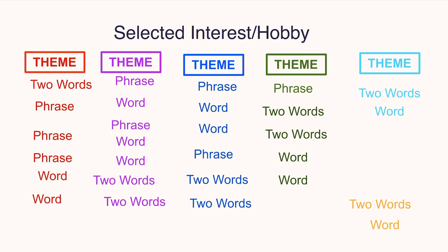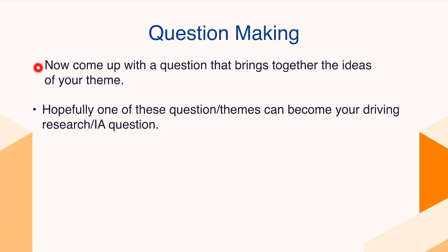So now you've got your selected hobby, three to five different groupings of words, and a theme summarizing each one. Now come up with a question that brings together the ideas of each theme. It's possible that one of these questions could be your actual IA topic — that leading research question or theme you want to explore in your IA.